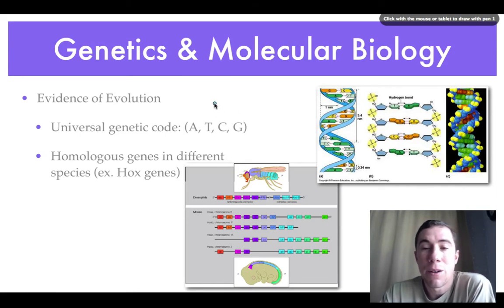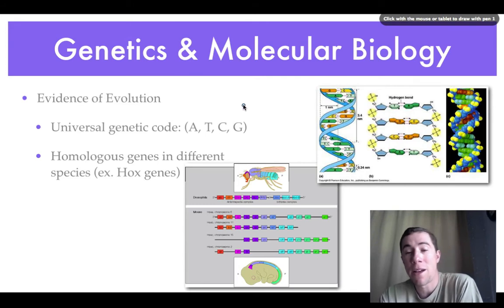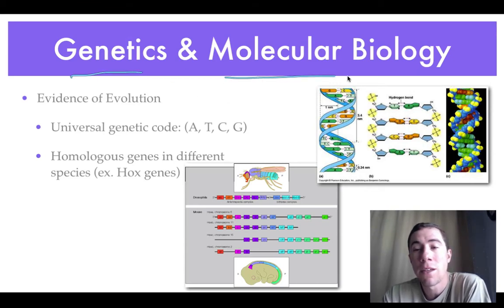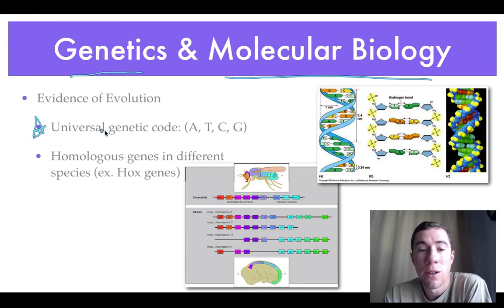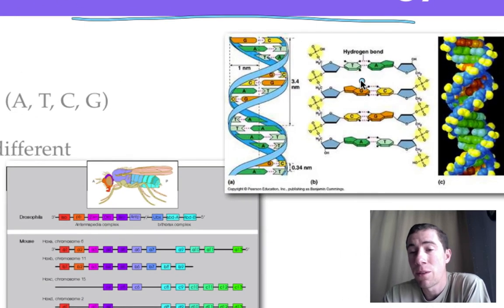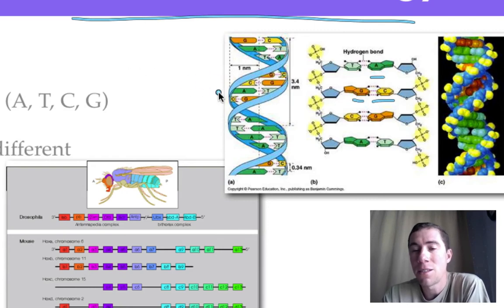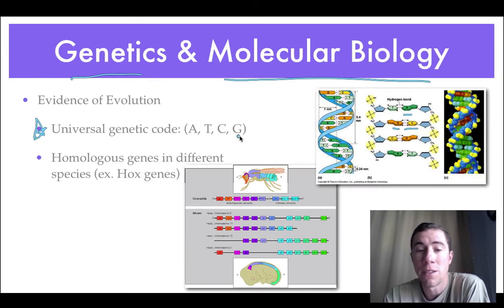During Darwin's time, he did not know the structure of DNA or how genes were passed down through generations. But with time and technology, we found that genetics and molecular biology can help support the theory of evolution. One major key is the universal genetic code. When we built our DNA structures, we talked about the four nitrogenous bases — adenine, thymine, guanine, and cytosine. What's really interesting is that all organisms on Earth share this genetic code, with the same four bases A, T, C, and G — which supports that we all descend from a common ancestor.